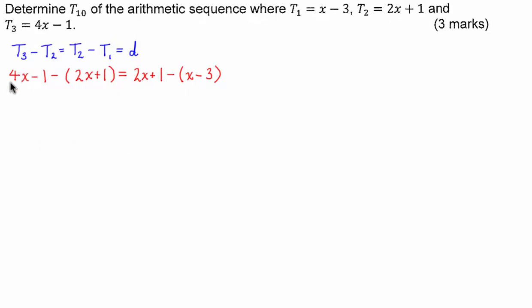On the left hand side I have 4x - 2x is 2x and I have -1 - 1 is -2 and that's going to be equal to on the right hand side I have 2x - x is simply x and I have 1 - (-3) so 1 + 3 is +4.